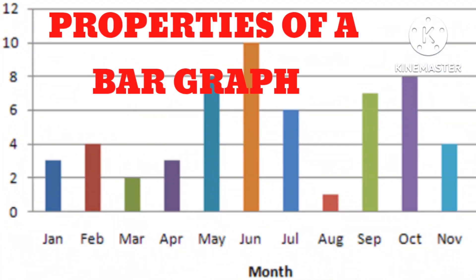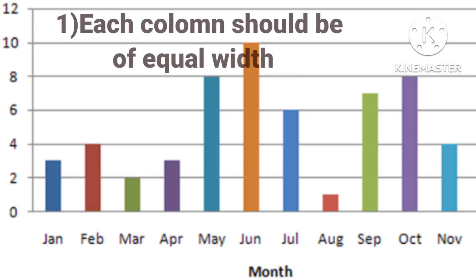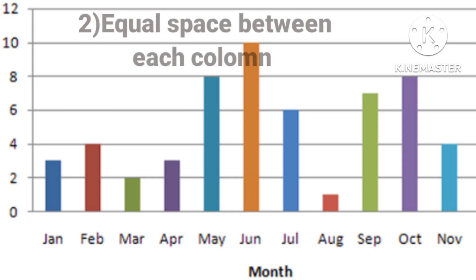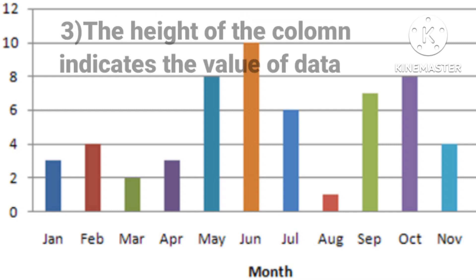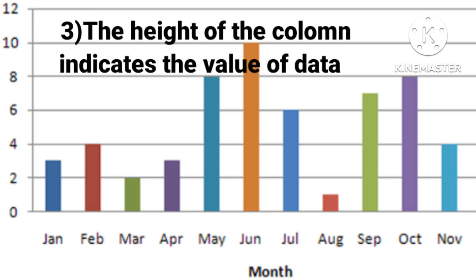Let's discuss some important properties of a bar graph. Each column of a bar graph should be of equal width. Equal space should be maintained between each column. The height of the column should indicate the value of the data.